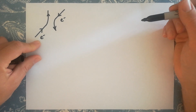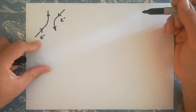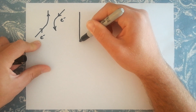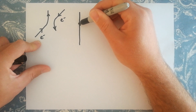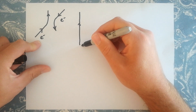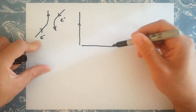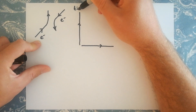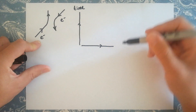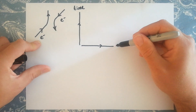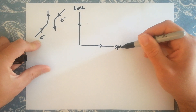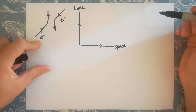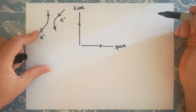Feynman diagrams are schematic diagrams which we think about as happening almost on a graph where we've got two axes. The vertical axis is time and the horizontal axis represents space or position.